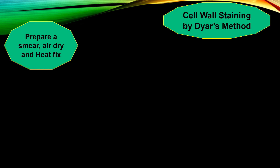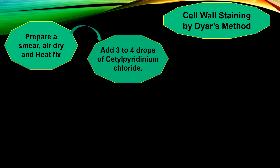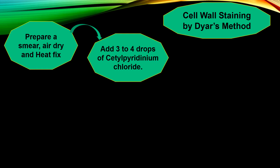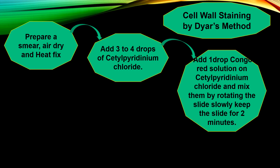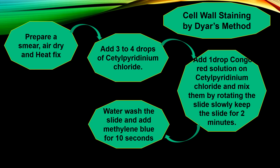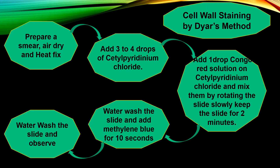Here is the flow chart of cell wall staining by Dyer's method: first prepare a smear, air dry and heat fix it. Add 3-4 drops of cetylpyridinium chloride, then add 1 drop of congorex solution and mix by rotating the slide slowly. Keep aside for 2 minutes. Water wash and add counter stain methylene blue for 10 seconds. Finally, water wash and observe under microscope.